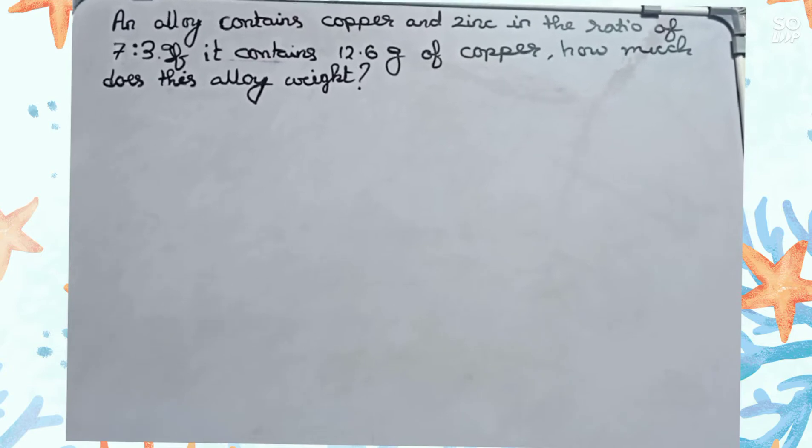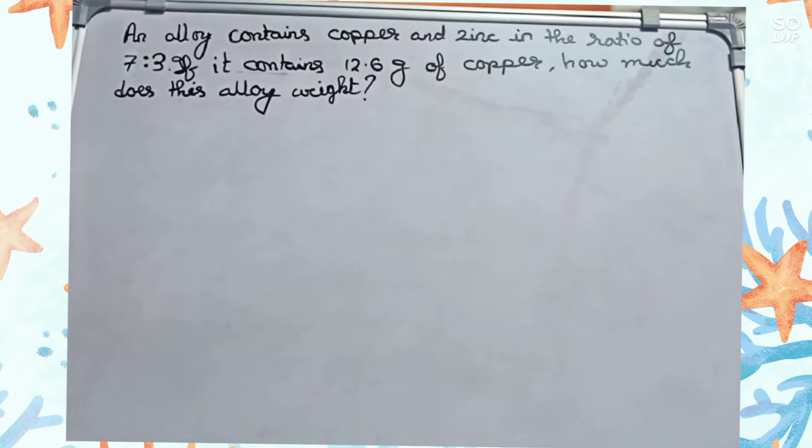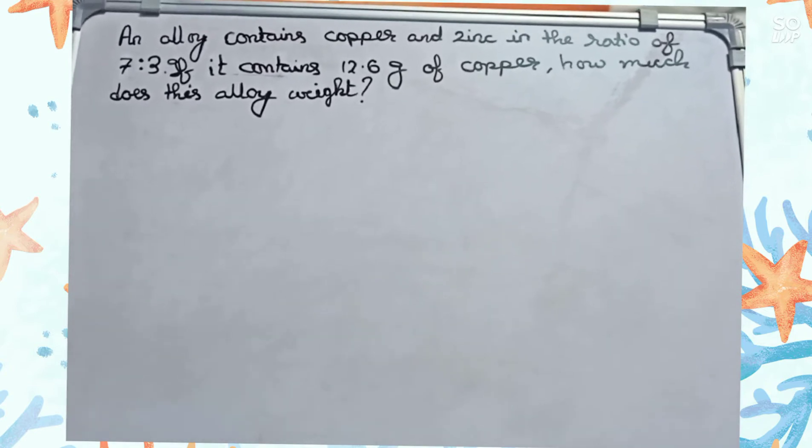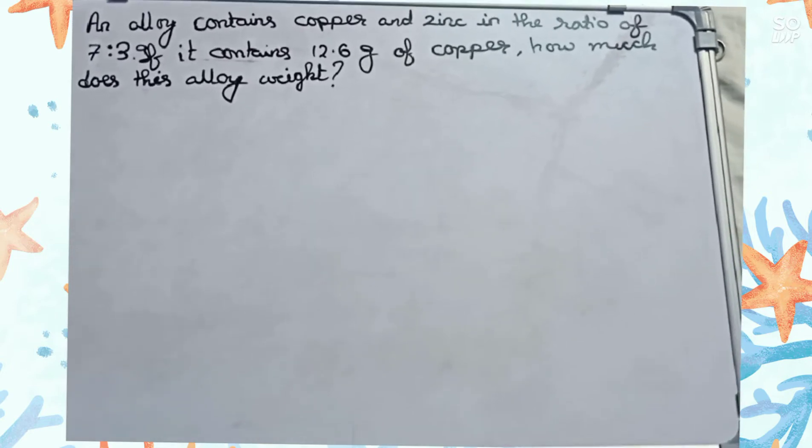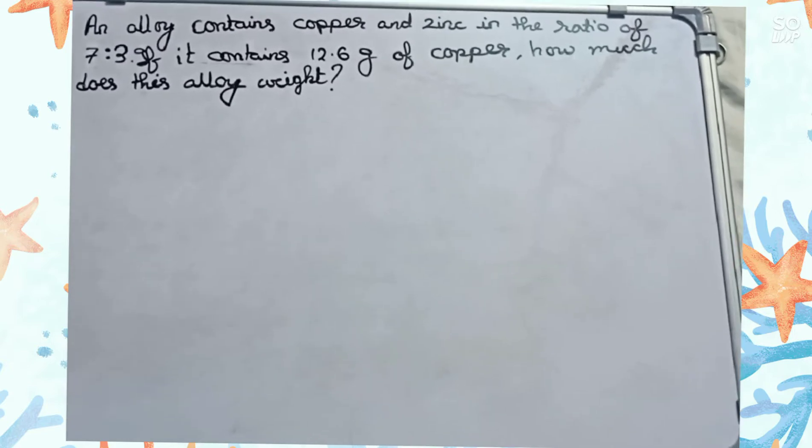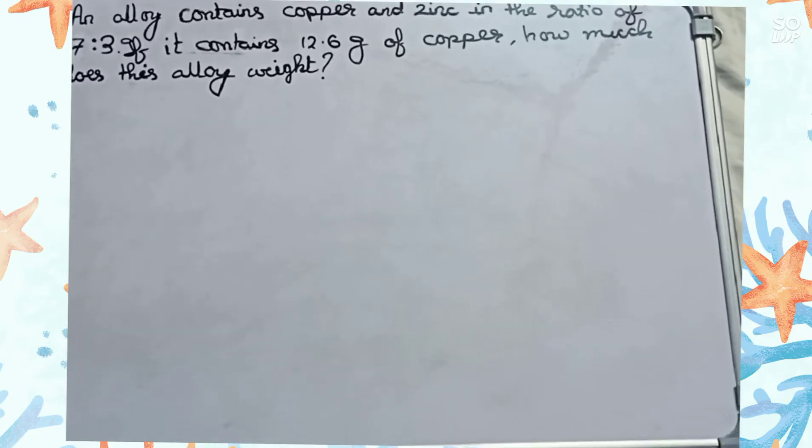Hello guys, welcome to this video. In this video our question is: an alloy contains copper and zinc in the ratio 7 is to 3. If it contains 12.6 grams of copper, how much does this alloy weigh?